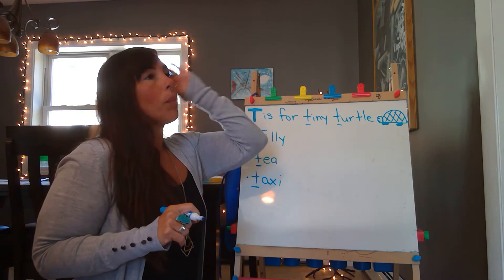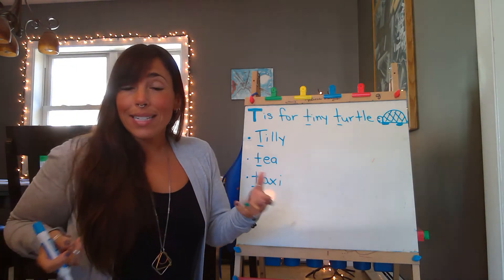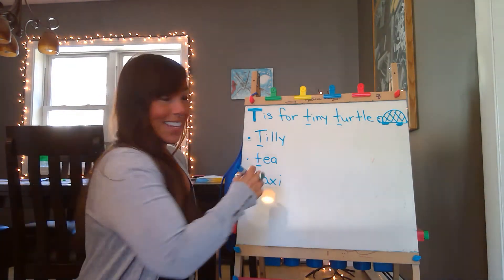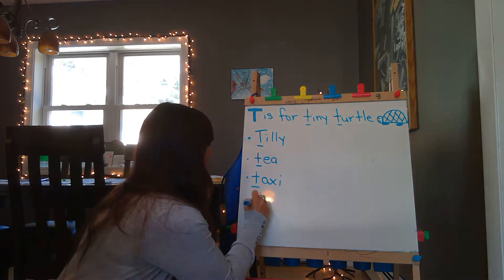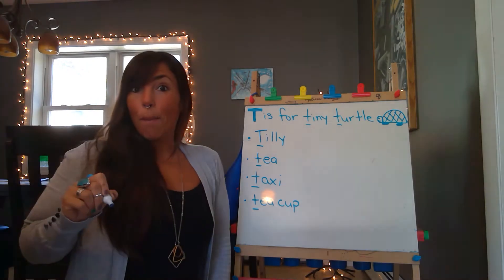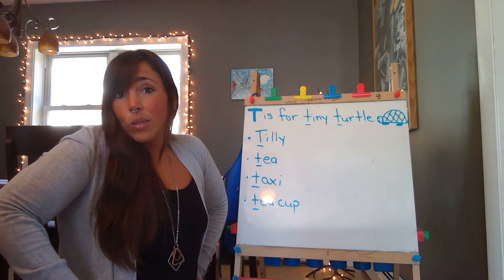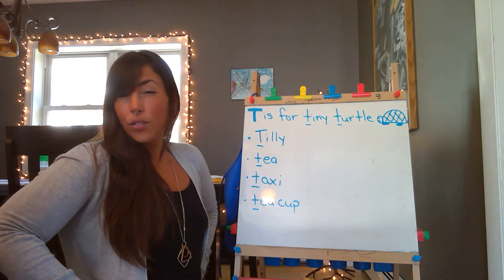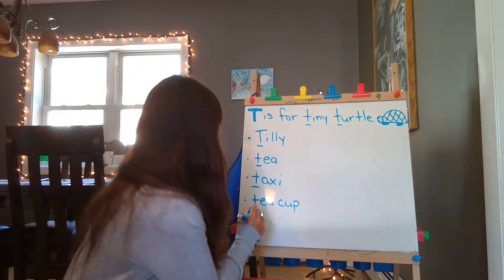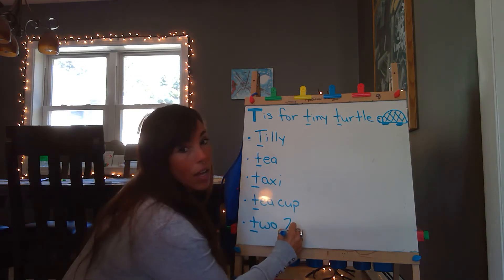Let's see, what else happened? We know that they drank tea — oh, what did they drink the tea out of? What were those little things? A teacup, right? So we'll write teacup. How about the friends that Tilly had? Who joined her at the tea party? There were two other animals. Two — T-W-O — the number two.